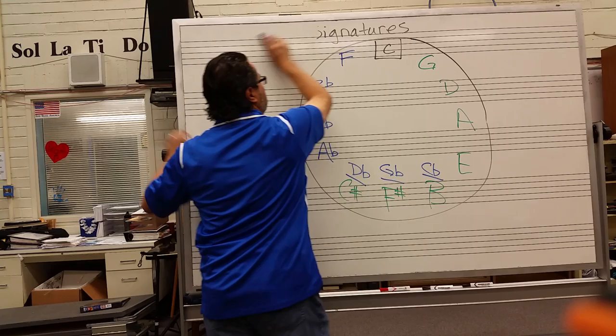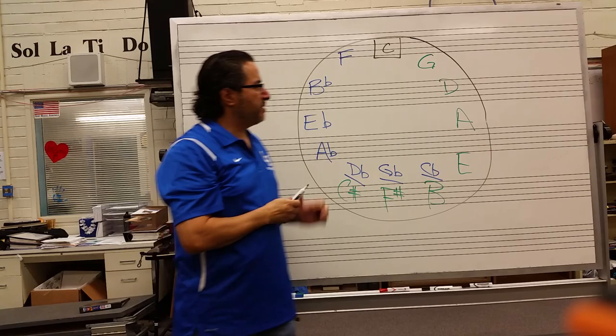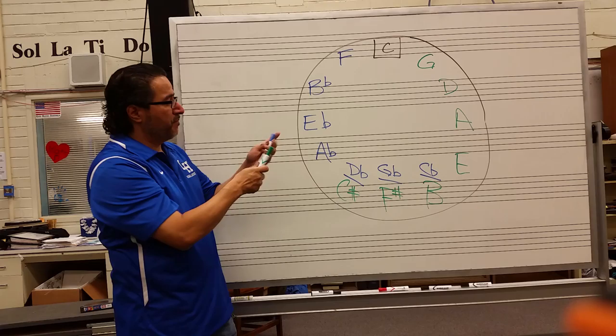There are various ways to learn how to recognize key signatures. I think the easiest is the circle of fifths. If you know your circle of fifths, you'll know your sharp and flat key signatures.